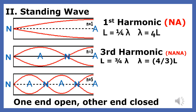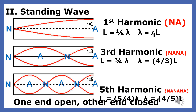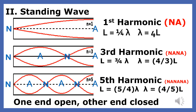Now let's look at the next harmonic. It is N, A, N, A, N, A — that is five quarters of a wavelength. This wave is produced by a frequency that is five times the fundamental. When we solve for the wavelength, we find that it is four-fifths of the length of the standing wave.